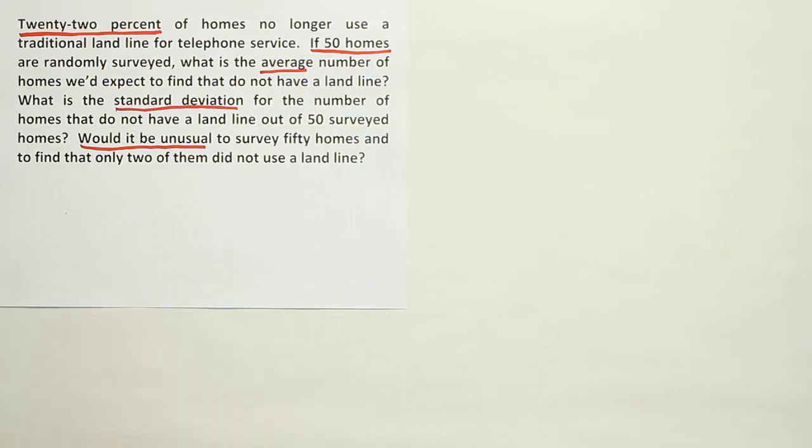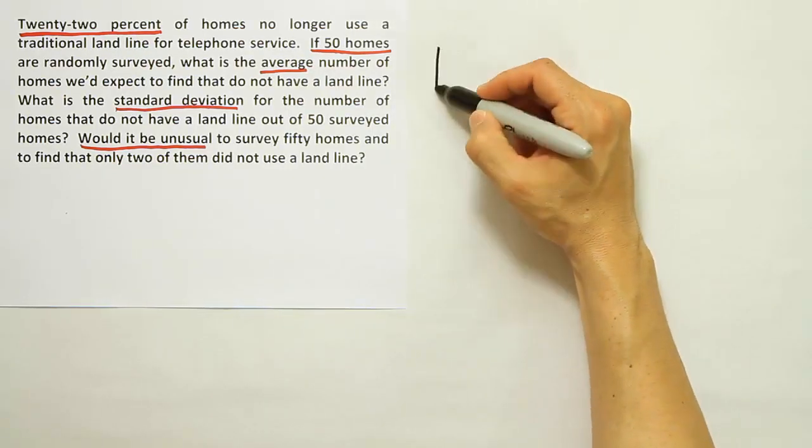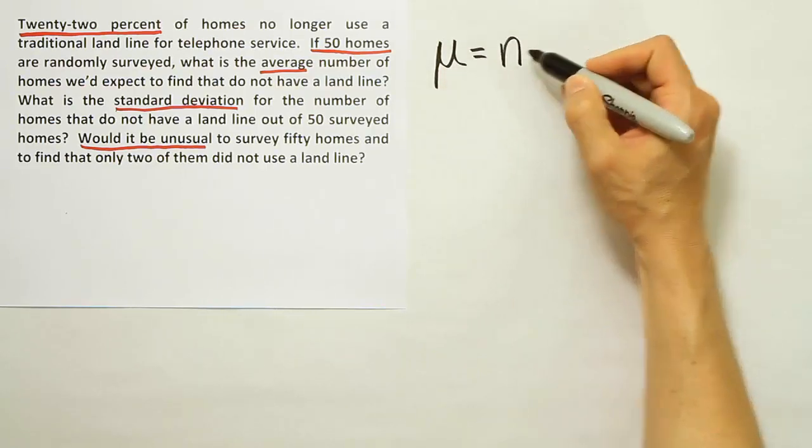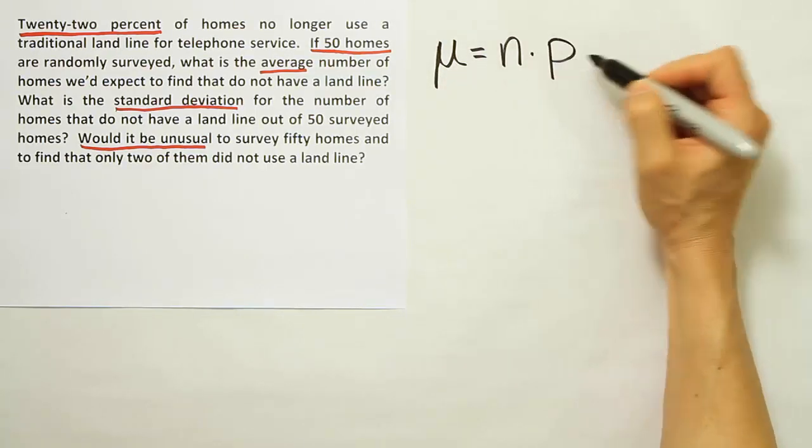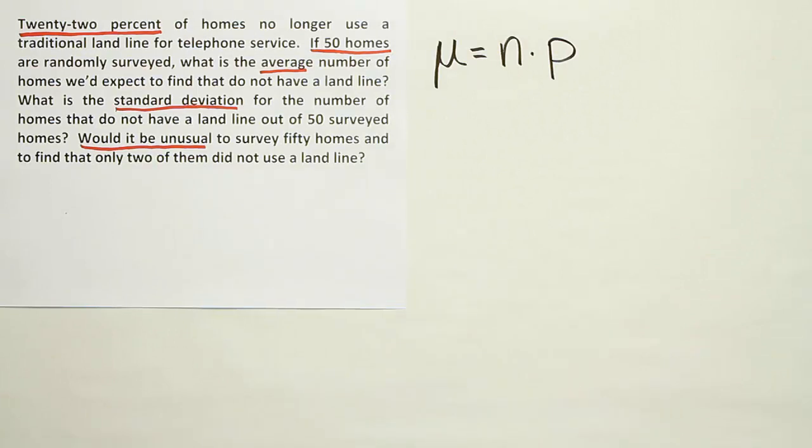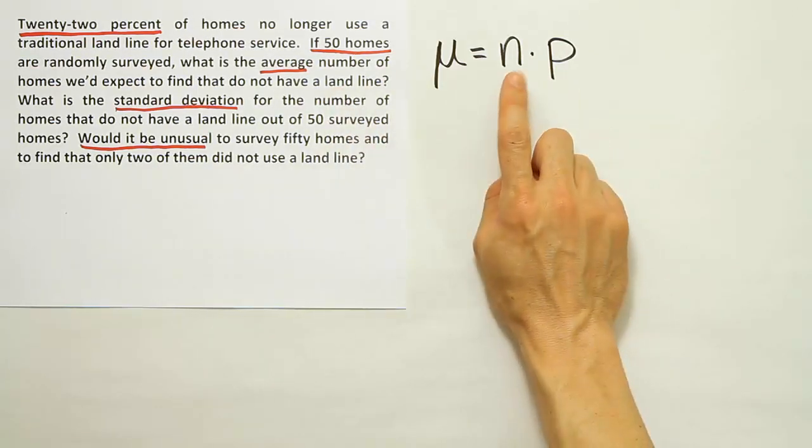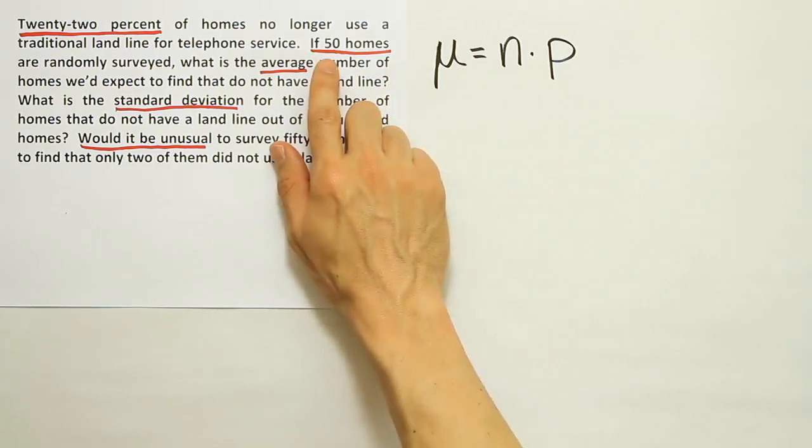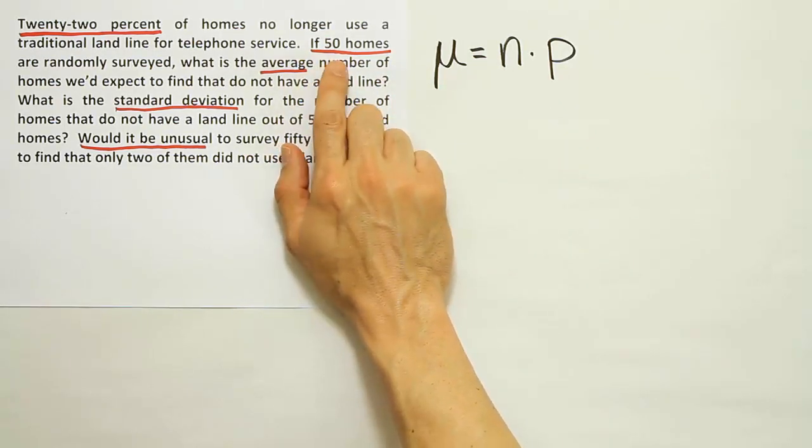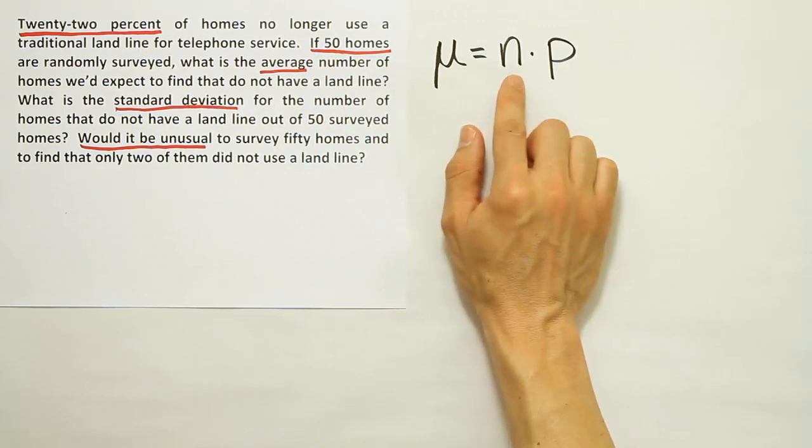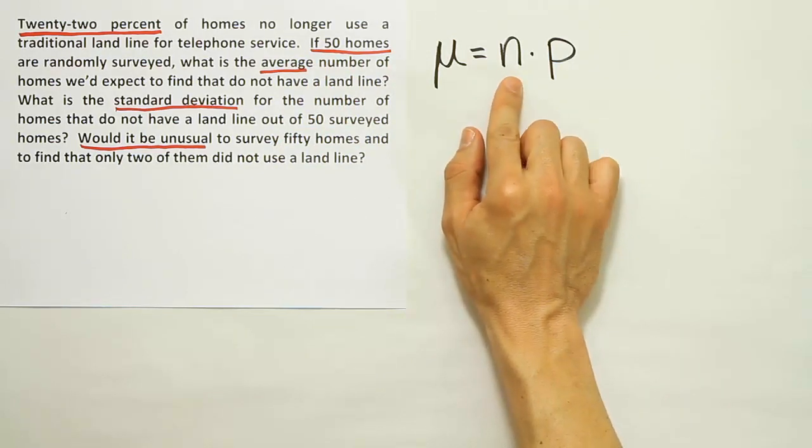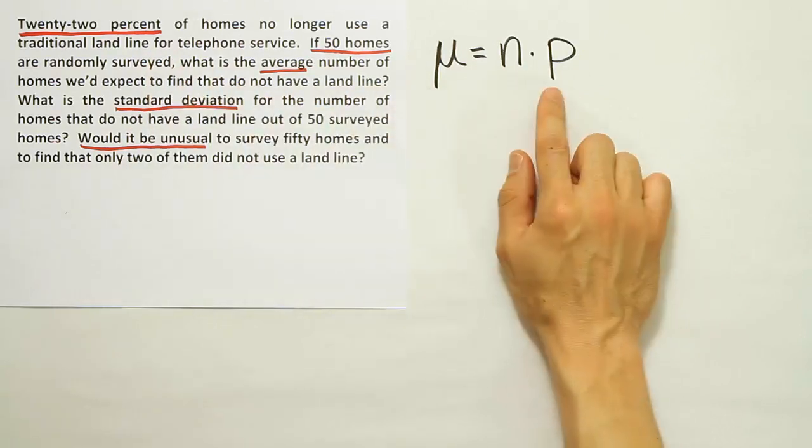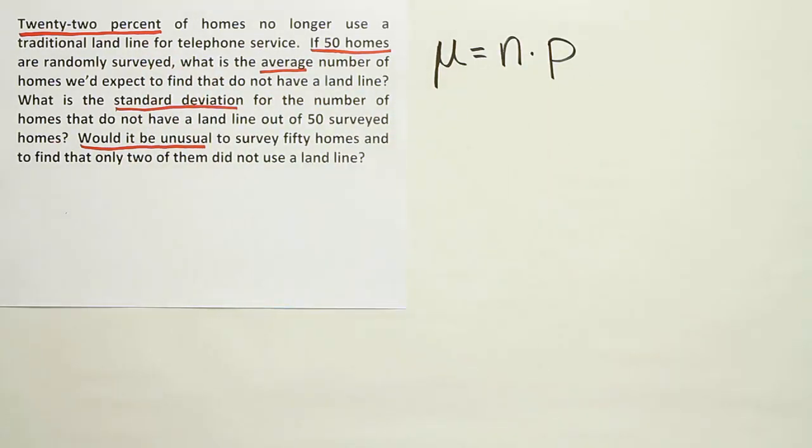When I think of that, I think this is probably a binomial probability problem, and they're probably giving us information that will help us fill in this very simple formula, the simple formula for the average of a binomial distribution. The mean is equal to n times p. This makes a perfect match for what we're given. We're given an n, a total number of items or trials. We're going to survey 50 homes, those are our trials. Each time we survey a home that's considered a trial, we have 50 of those trials. And then we have a percentage, 22%. That's enough to get the mean if this is a binomial scenario.